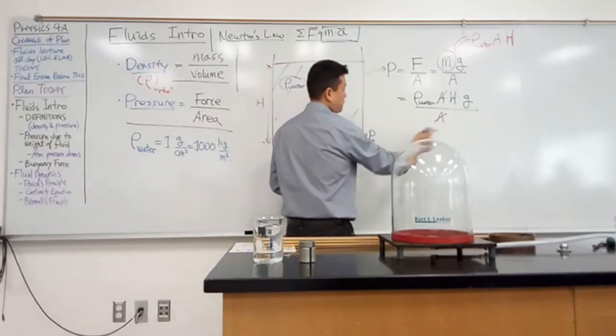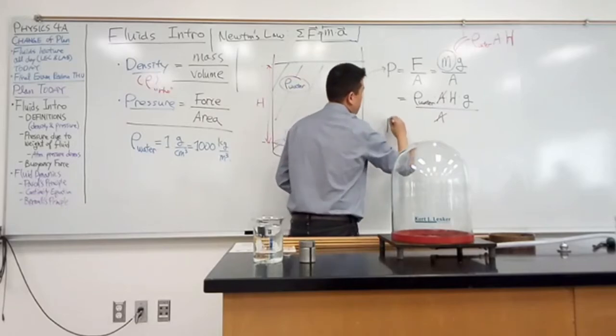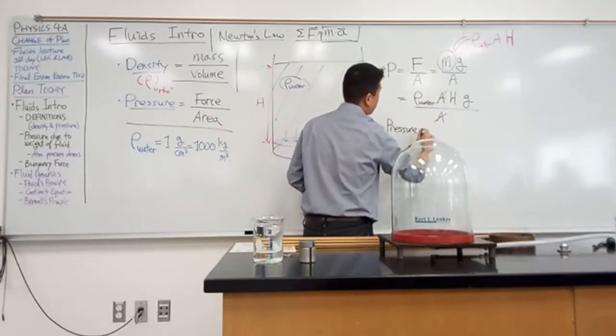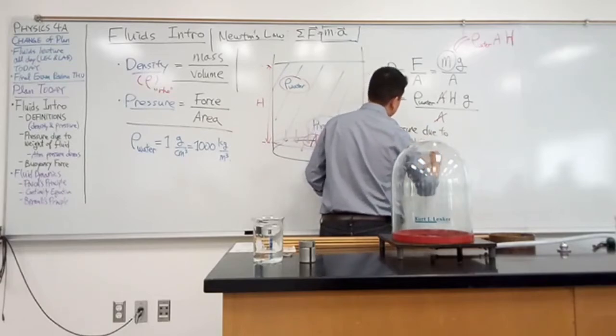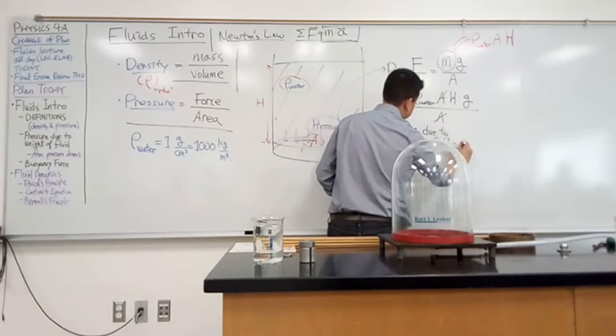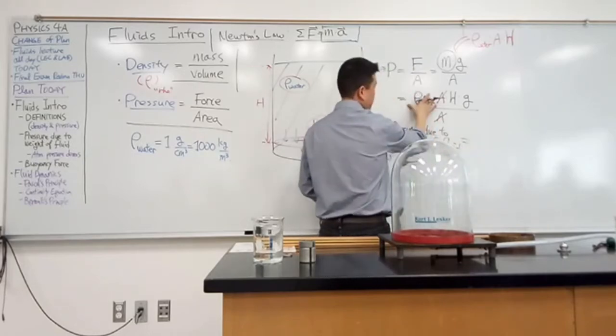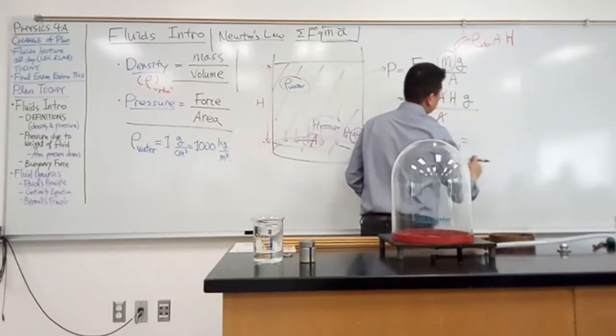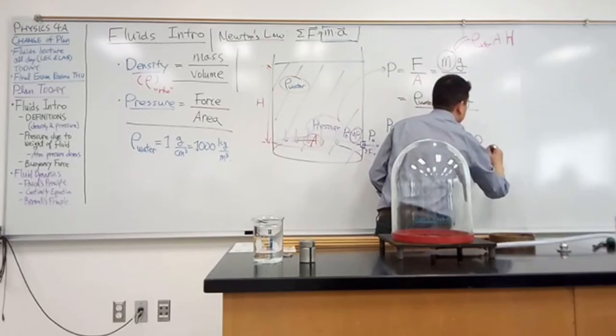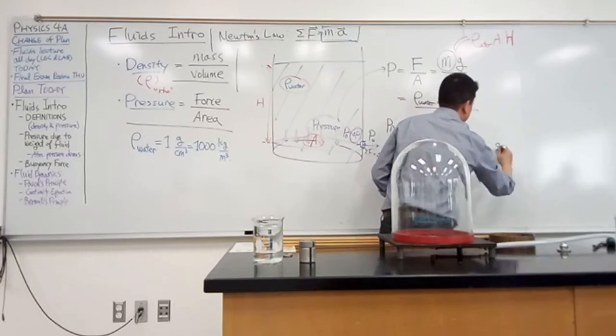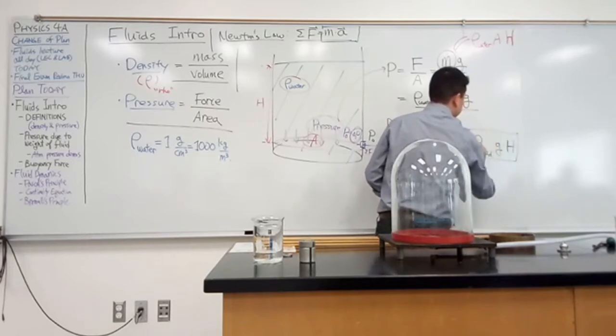So this is a formula that we call pressure due to weight of fluid. And that's equal to the density times height, or the way we usually write this: density times gravitational acceleration, density of fluid times g times the height, the depth of the fluid.